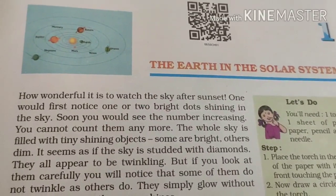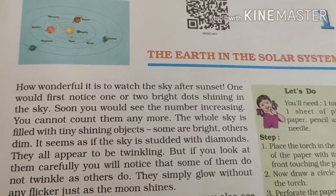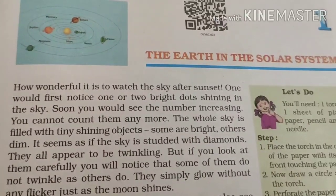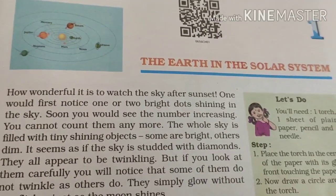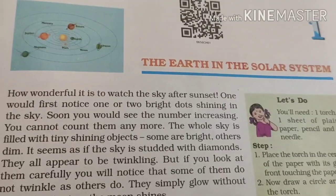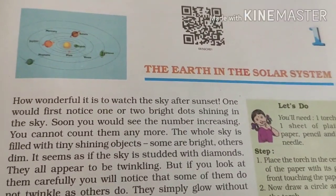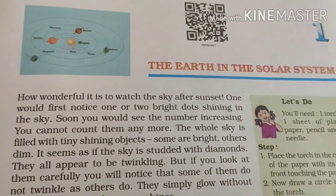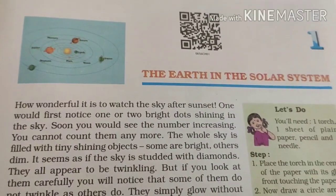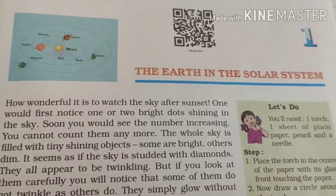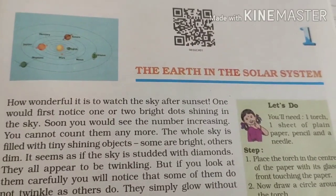All the objects that you can see in the sky are called heavenly bodies or celestial bodies. These include stars, planets, satellites, comets, meteors, and asteroids. The word celestial is derived from the Latin word 'celestis', which means sky. Whatever objects are found in the sky are called celestial bodies.